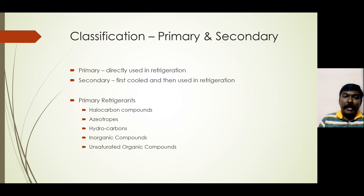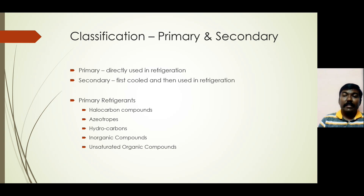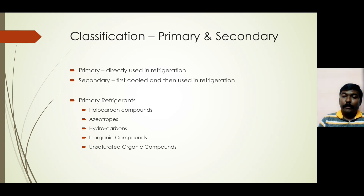So how are refrigerants classified? The major classification is the primary refrigerant and the secondary refrigerant. The primary refrigerant is one which is directly used in refrigeration — where the refrigerant itself is capable of removing heat from the substance or the storage space. What about secondary refrigerant? The secondary refrigerant is the one which removes heat from the storage space or the stored materials, playing a secondary role.